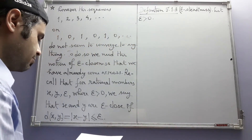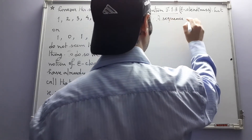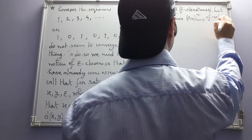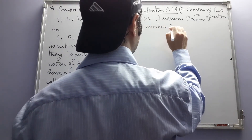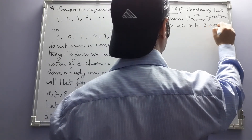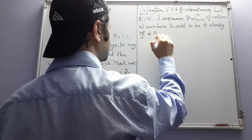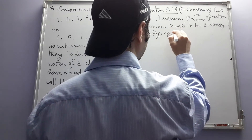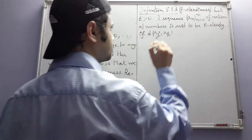Another, easier example: the sequence 0.1, 0.01, 0.001, etc. In this case, it is even easier to guess that this sequence is trying to converge to the rational number 0. The further you go down the sequence, the terms become closer and closer to 0. However, other sequences are not like that — not all sequences exhibit this behavior, and those sequences we will have no use of, at least in defining real numbers.